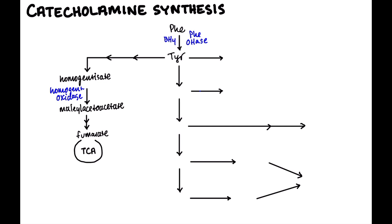What else can happen to tyrosine? Tyrosine is part of thyroid hormone, but in order to become thyroid hormone it needs to receive iodine. This happens through oxidation then organification of iodine, which gets added onto tyrosine residues on thyroglobulin. So tyrosine is a constituent of thyroid hormone — both thyroxine and triiodothyronine. The enzyme indirectly responsible for this is TPO, thyroid peroxidase.